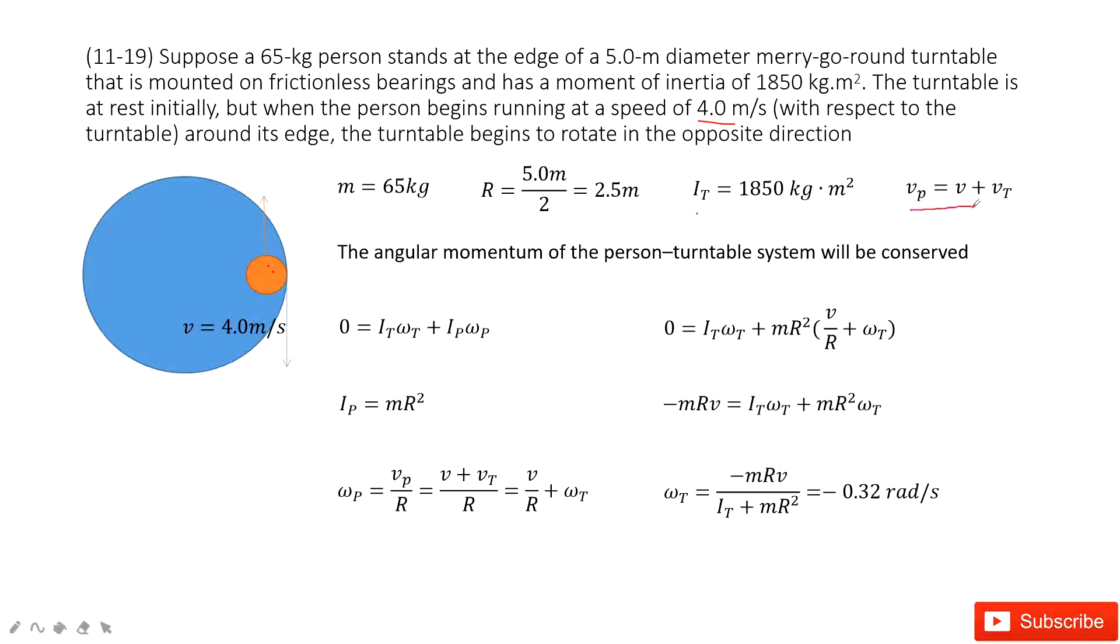So we get this function. The velocity of the person to the ground, we call vp, equal to v. This one is given. It's the velocity of the person to the turntable plus the velocity turntable to the ground, we call it vt.